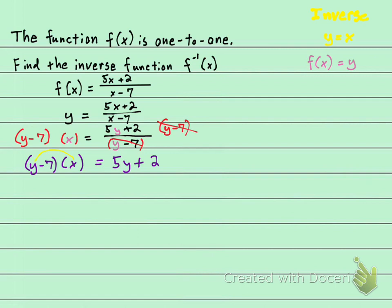I'm going to distribute the x, that way this y will kind of be unlocked, and it will be in a term where I can put it together with the 5y. Let's see what that looks like. x times y is xy minus 7 times x is 7x. And that equals 5y plus 2. Right side drops down.